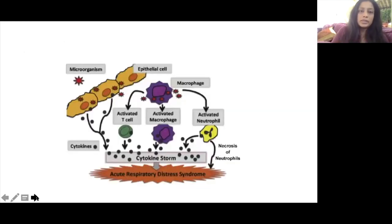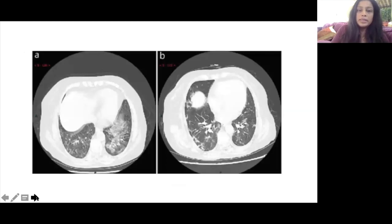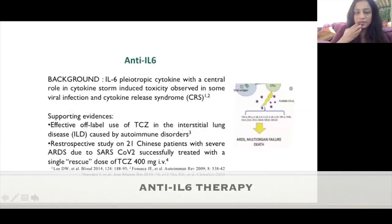Regarding the cytokine storm, how do we treat this acute respiratory distress syndrome? We would like to use steroids, but for many reasons including increased risk of infection, we prefer to avoid them. CT scans of many severe patients show multiple bilateral infiltrates.